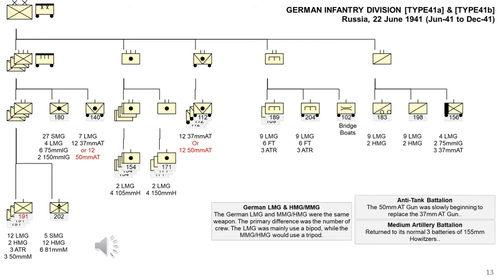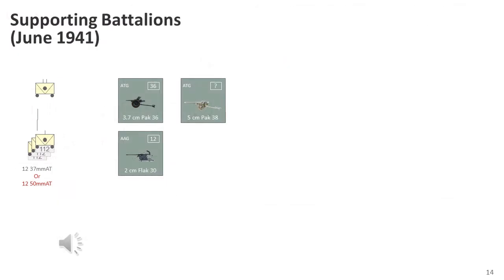By October 1941, most divisions were certainly understrength, and by January 1942 this would have been even more pronounced, with casualties reaching 900,000 — representing up to 20% losses. It's unlikely many divisions received the 5cm anti-tank gun by June 1941, with more possibly equipped by January 1942. I'm uncertain whether the Germans mixed 3.7cm and 5cm anti-tank guns within the same battalion — the British, Americans, and Russians certainly did, but there's very little evidence the Germans did so.